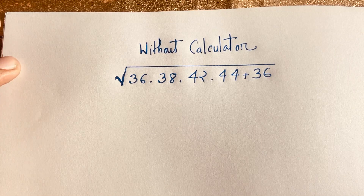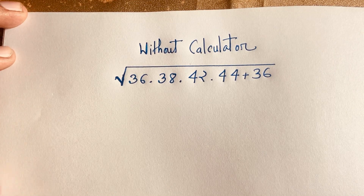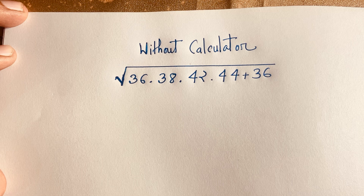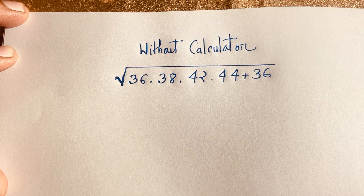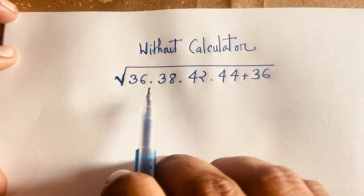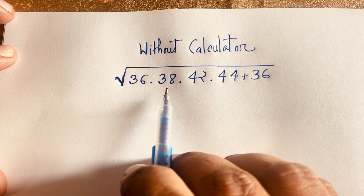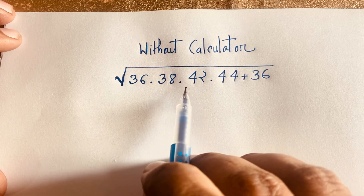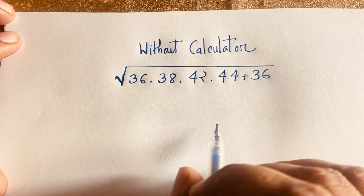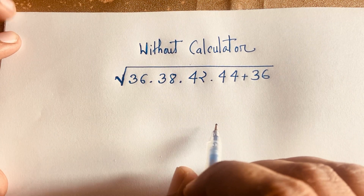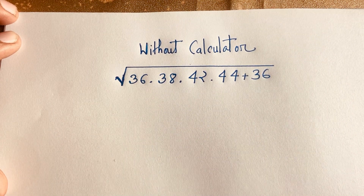Hello everyone. In this video we have solved this Russian math number question without a calculator. The question is: square root of 36 times 38 times 42 times 44 plus 36 — what does this equal? How to solve this question without a calculator?